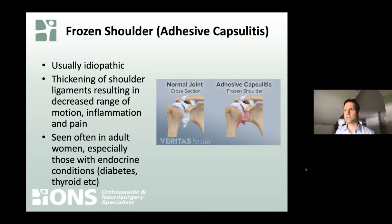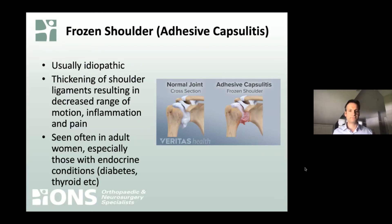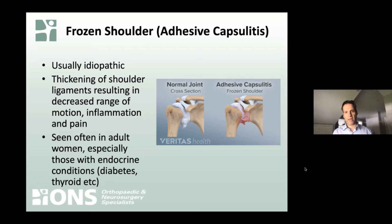Another condition involving the deepest layer of the shoulder — the ligaments and capsule — is what we call frozen shoulder, or adhesive capsulitis. No one is really sure why it happens, though it is associated with adult women, especially those with endocrine conditions like diabetes or hypothyroidism. In a frozen shoulder, the ligaments become really thick, tight, and extremely inflamed. Over time, the shoulder gets tighter and tighter, and any movement causes significant pain — you can't move the joint very well.